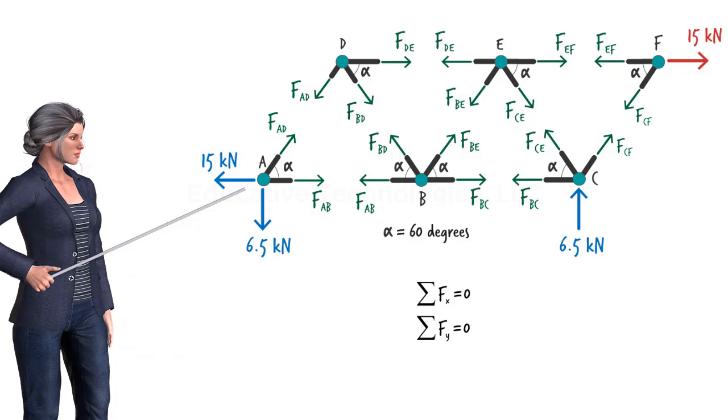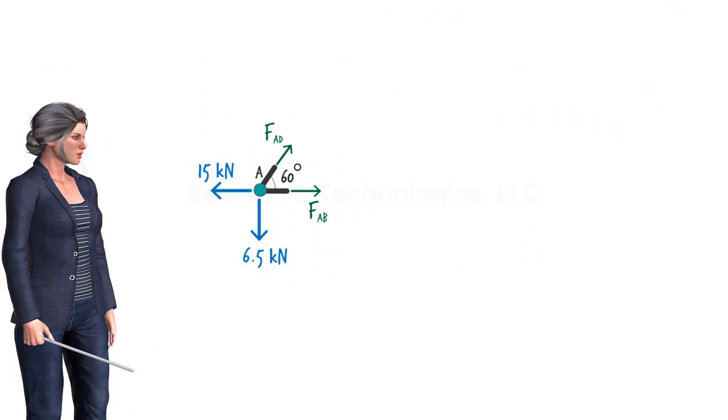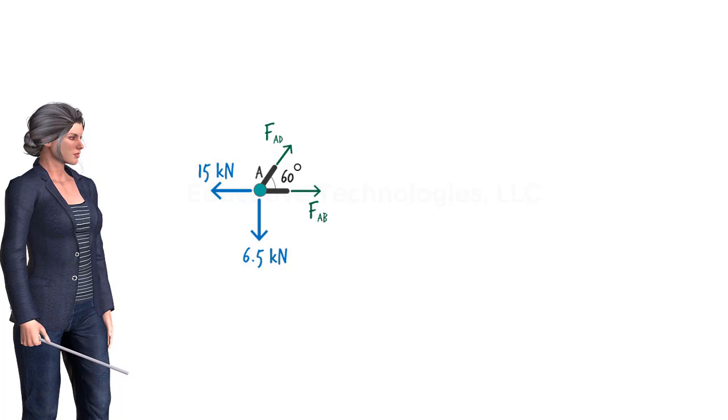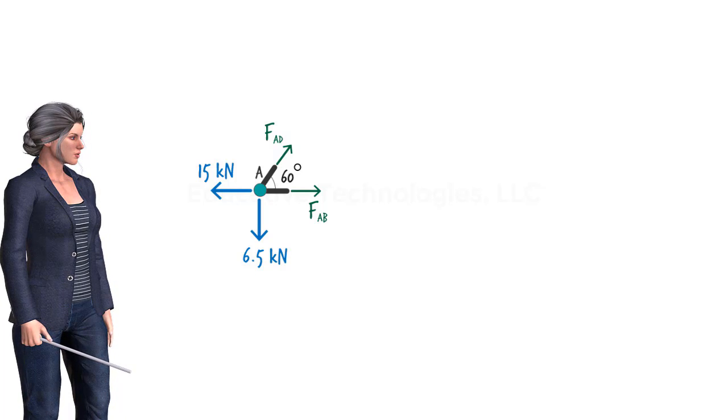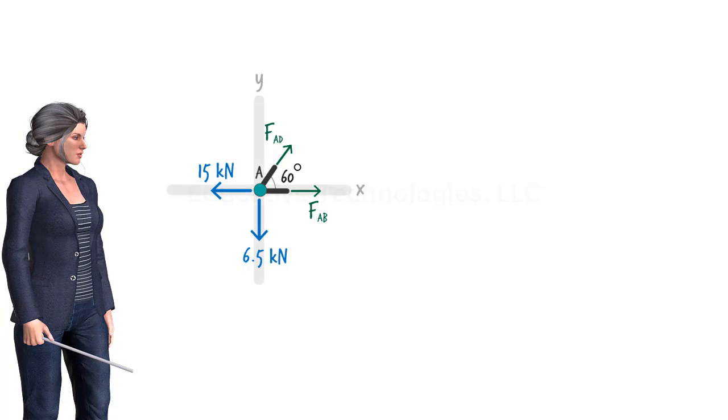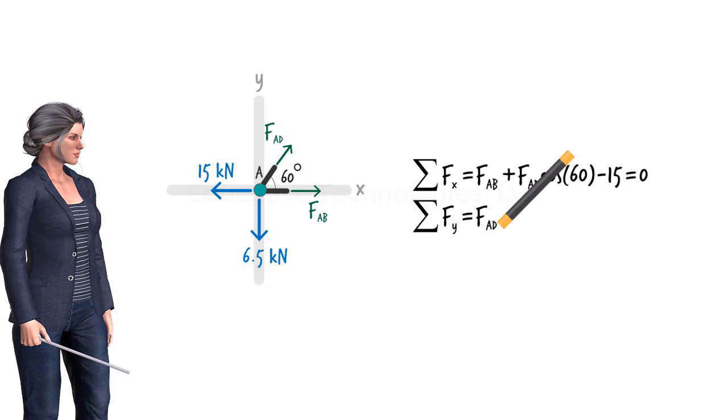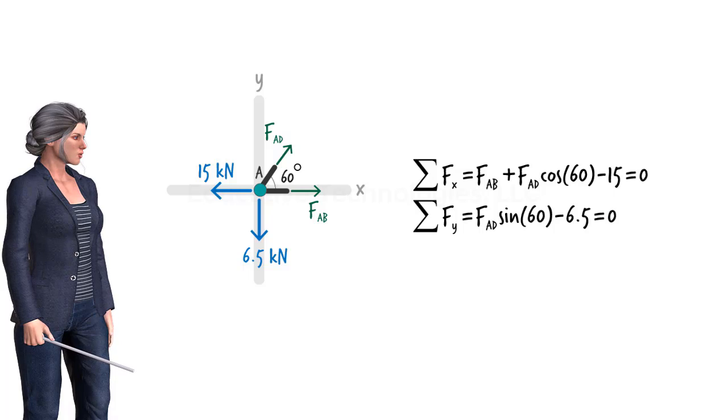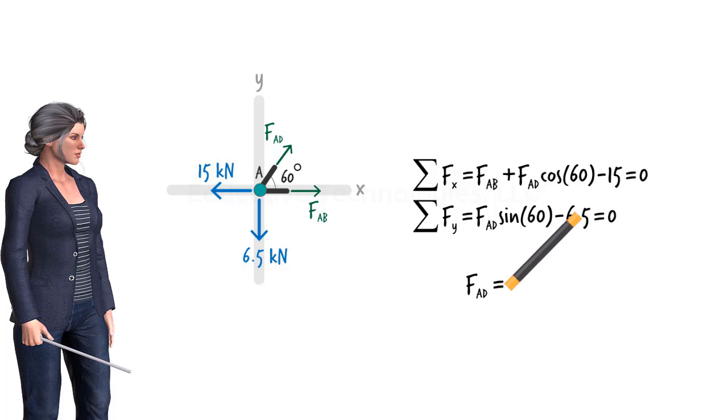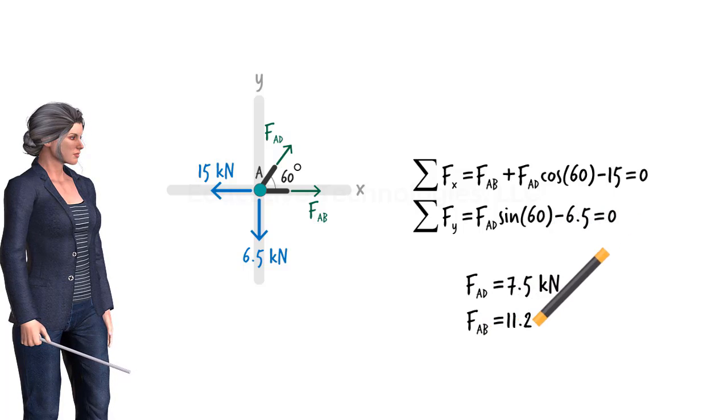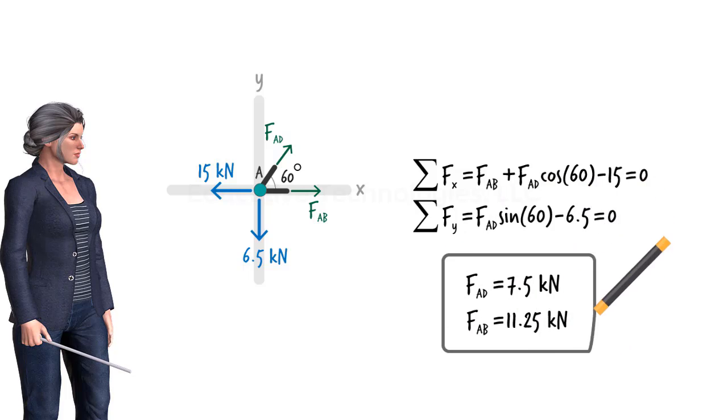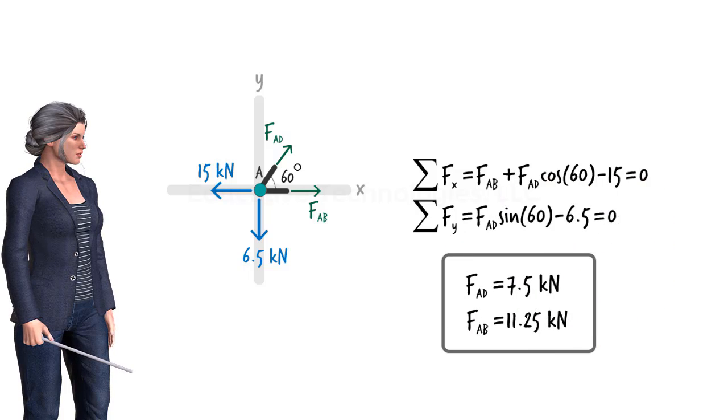Consider joint A. Four forces are acting on it, but only two of them are unknown. Applying the equilibrium equations to the joint therefore enables us to determine the unknown forces. The equations are, solving them for FAD and FAB, we get, let's write these values on the force diagram.